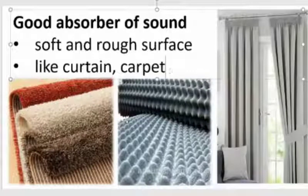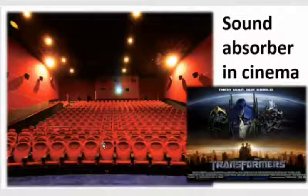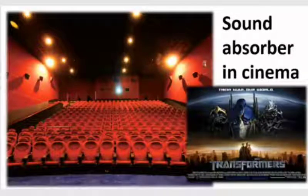In a cinema, sound absorbers are used throughout. The seats are made of soft cushions to absorb the loud sound produced by the movie, giving a real effect for viewers. The walls also have sponge-like material inside to absorb sound, and carpet is used on the floor. Studios also use sound absorbers similarly.